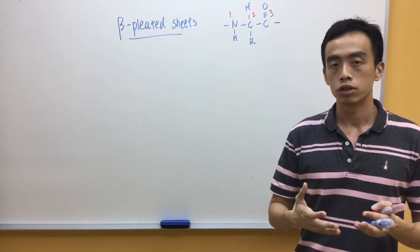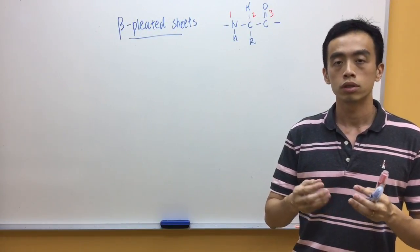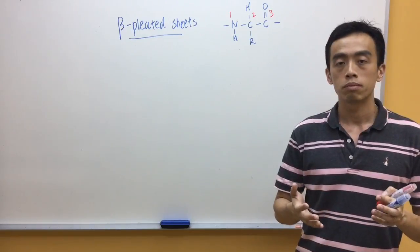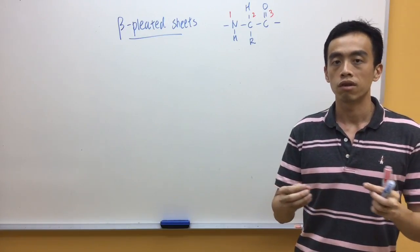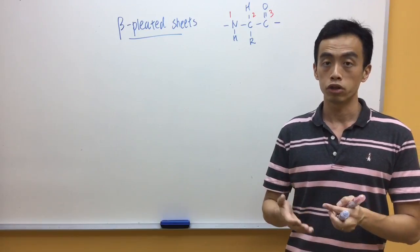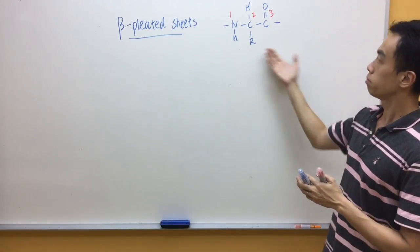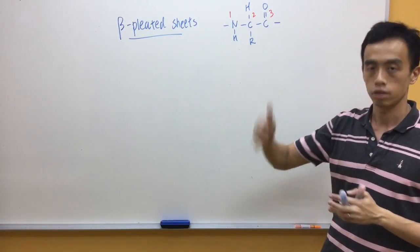Now, before we draw our beta-pleated sheets, we have to go through the primary structure. Now, what we need to keep in mind is our primary structure is in a very predictable and repeated arrangement. Basically, it's just this particular structure and it's in a repeat unit.